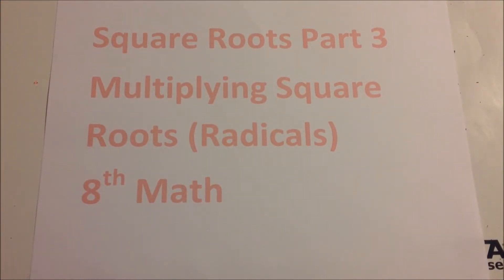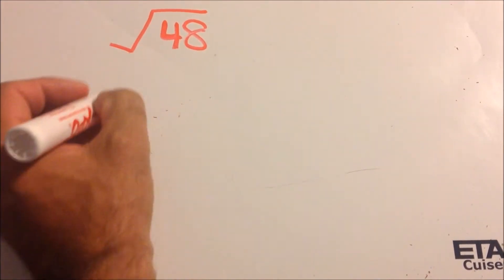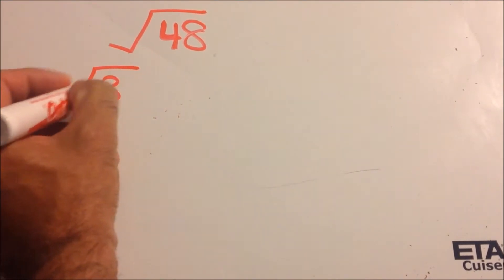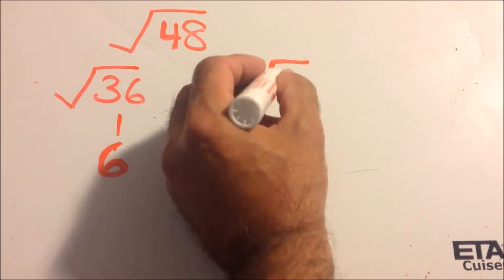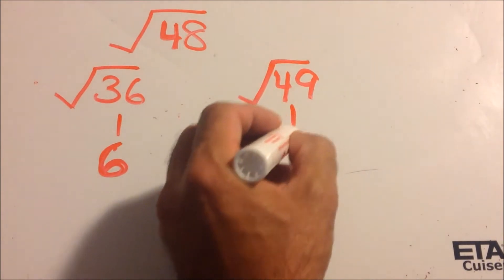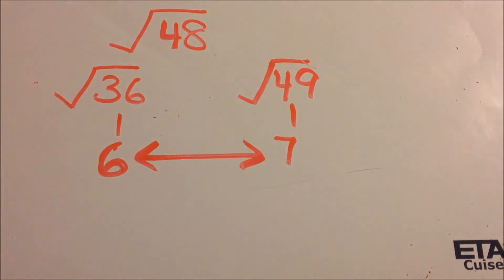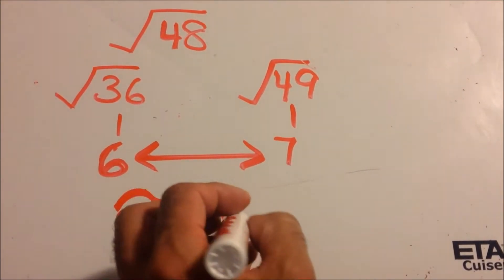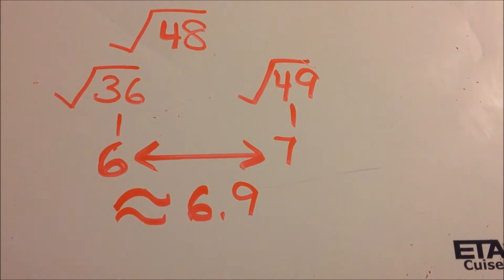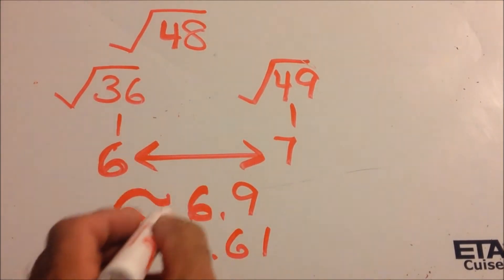Let's review. Let's say we had the square root of 48. We know it's between two perfect squares: the square root of 36, which is 6, and the square root of 49, which is 7. So it's between 6 and 7, and it's very close to the square root of 49, so we can guess it's approximately 6.9.